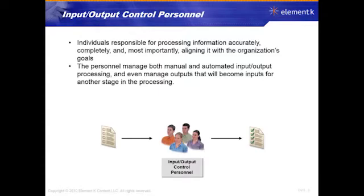The input and output control personnel are a group responsible for making sure that all processing of information does what we want it to do and aligns with the organization's goals. They manage both automatic input — like sensors automatically feeding data — and manual input entered by people.